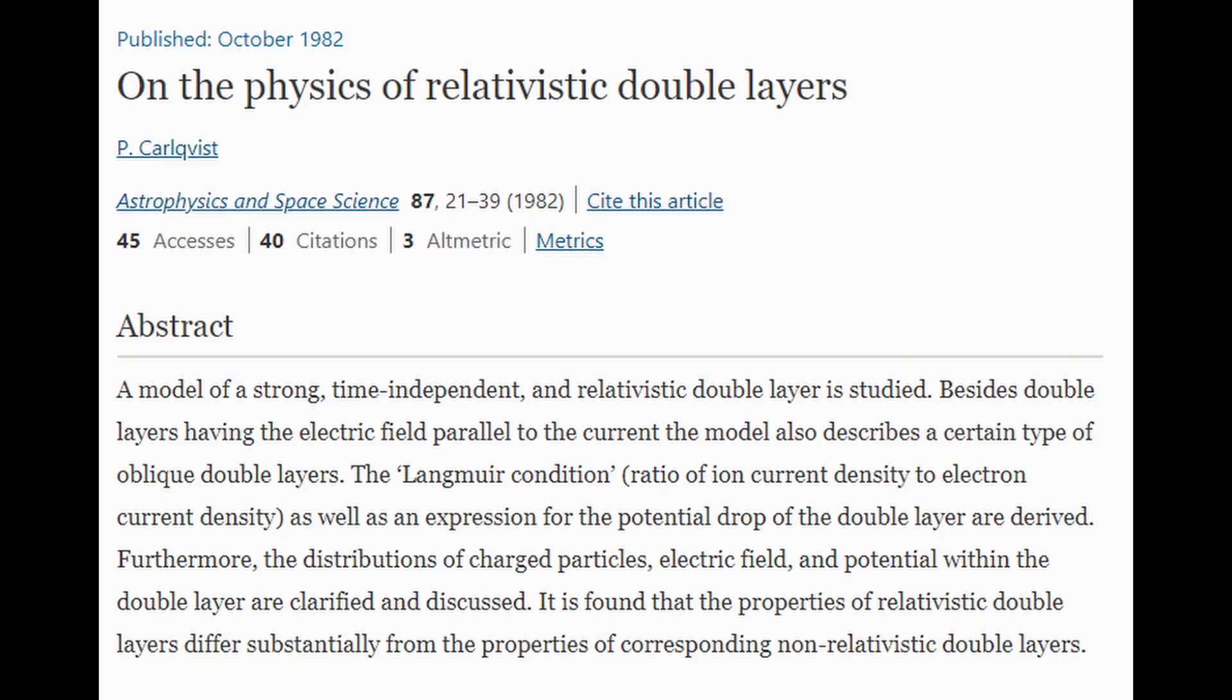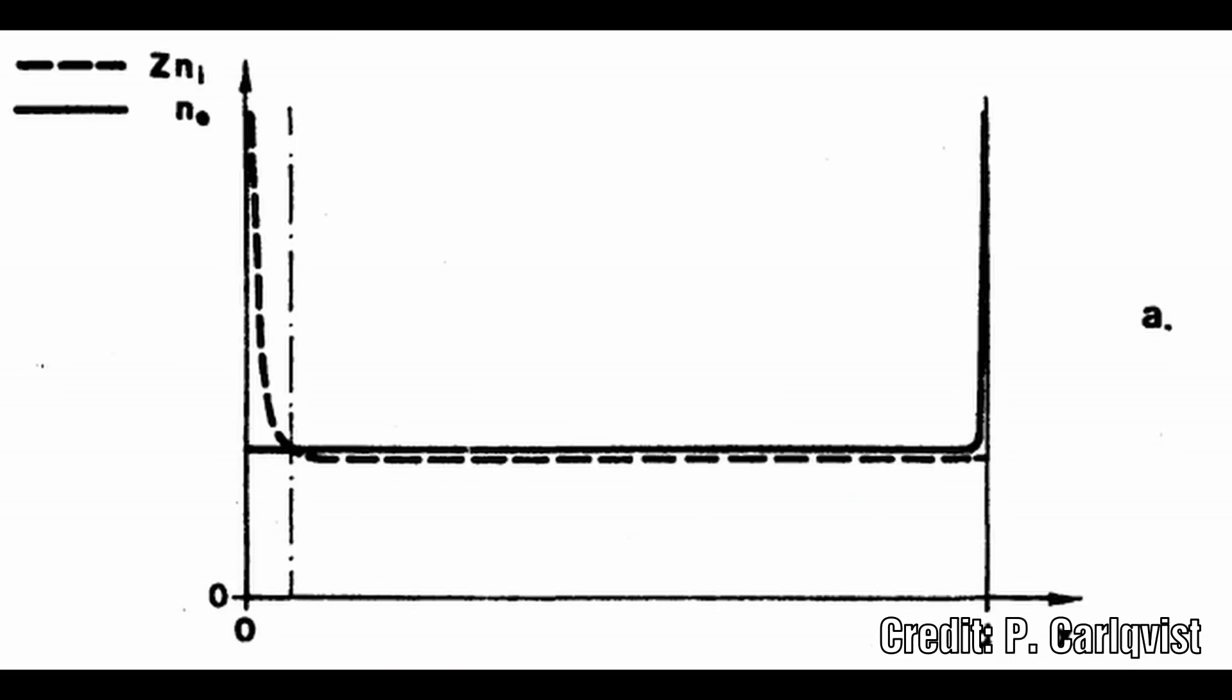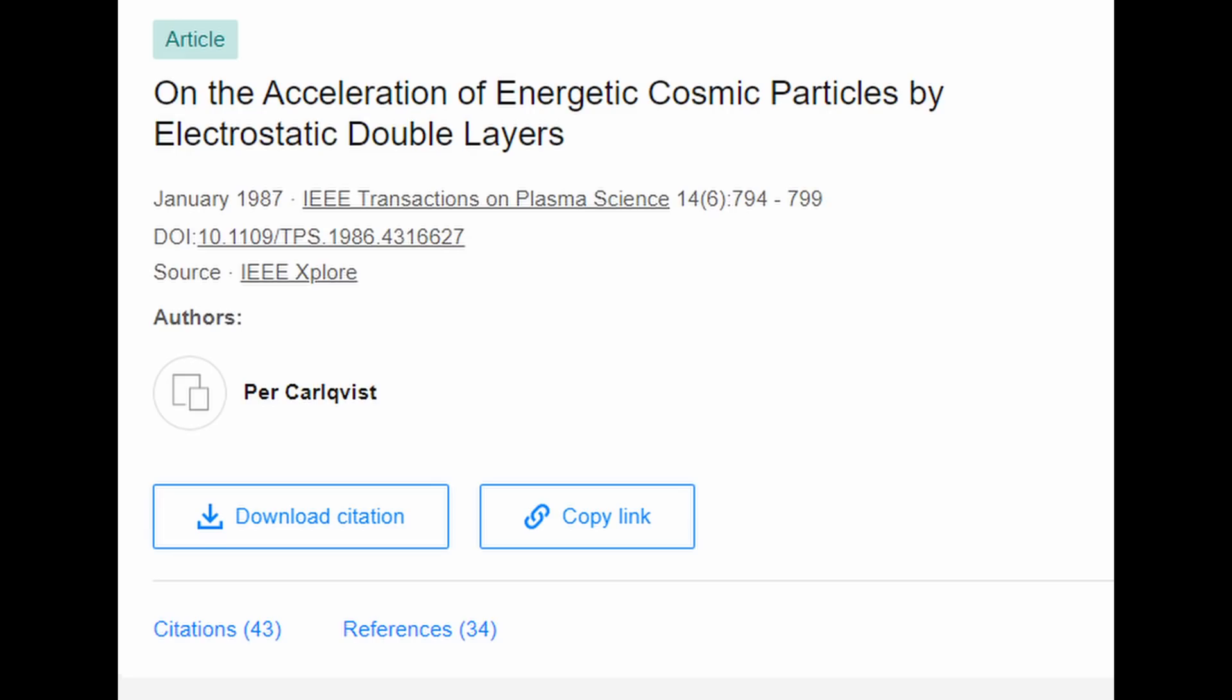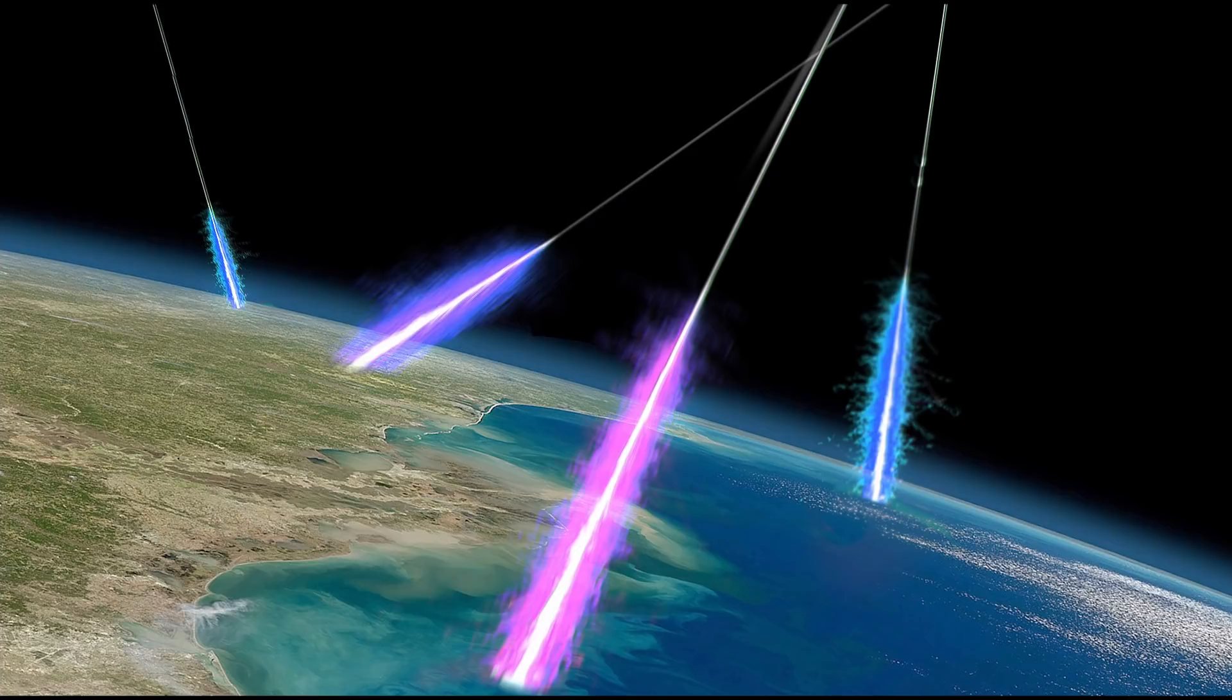Karlqvist found that in relativistic double layers the distribution of charges can be divided into three regions: two density spikes near the electrodes and one intermediate region with almost constant charge density. In a later paper Karlqvist gives examples of possible galactic double layer voltage differences of 10^14 volts. This by straightforward extrapolation from our knowledge of our cosmic neighbourhood means that we can derive an acceleration mechanism which brings us up to the energy region of cosmic radiation.